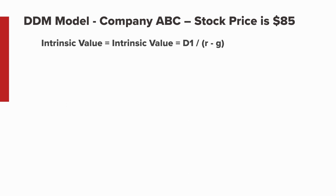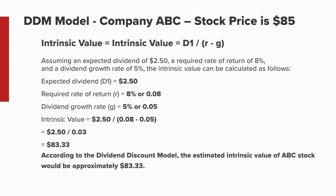Using company ABC as an example: assuming an expected dividend of $2.50, a required rate of return of 8%, and a dividend growth rate of 5%, the intrinsic value can be calculated as follows. D1 equals $2.50, R equals 8%, and G is 5%. According to the dividend discount model, the estimated intrinsic value of stock ABC would be approximately $83.33.